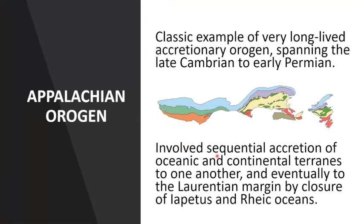The Appalachian orogen is a classic example of a very long-lived accretionary orogen spanning almost 200 million years from Late Cambrian to Early Permian time. It involved the sequential accretion of oceanic and continental terrains to one another, and eventually to the Laurentian margin by closure of the Iapetus and Rheic oceans. Accretionary orogens are sites of long-lived convergent margin tectonics, both compressional and extensional, and they host the majority of the world's important gold deposits. They typically contain a very diverse range of deposit types, commonly in close proximity in both space and time.